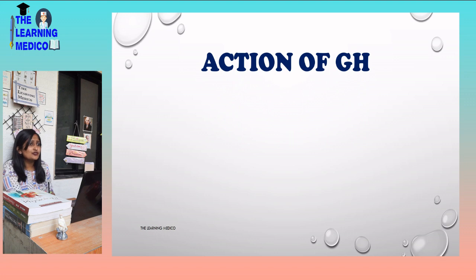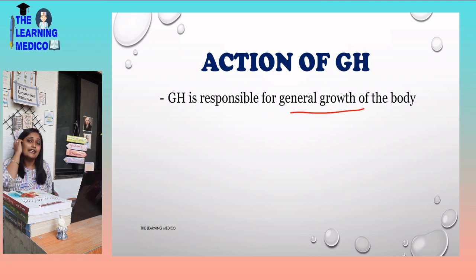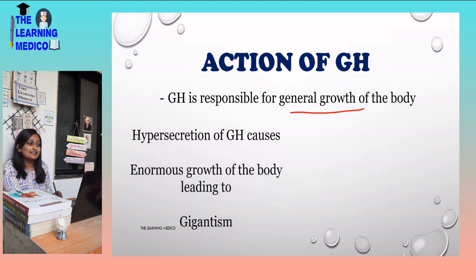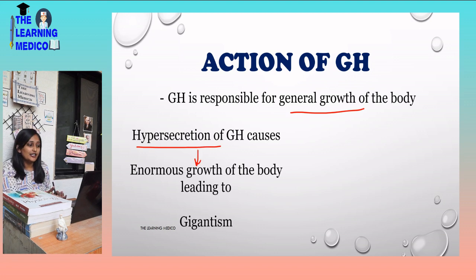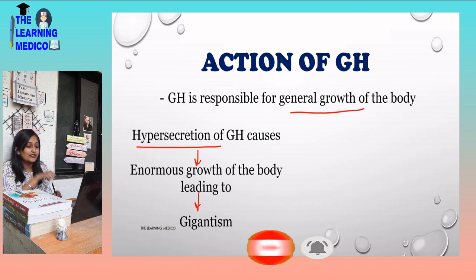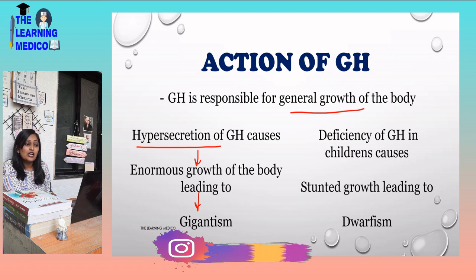What is the action of Growth Hormone? Growth Hormone is responsible for the general growth of the body. Hyper-secretion of Growth Hormone — if Growth Hormone is in excess — will cause enormous growth of the body, leading to gigantism. Deficiency of Growth Hormone in children causes stunted growth, leading to dwarfism. This topic is also important for 5-mark questions.